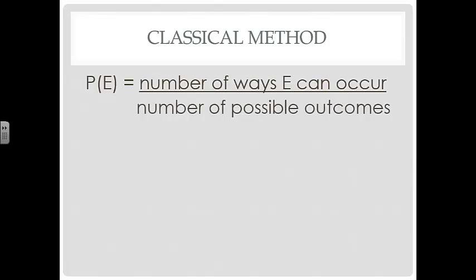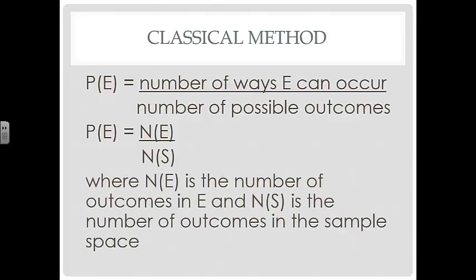All right, so now we're going to take a look at the classical method. And that is basically the relative frequency. So we're looking at the probability of this event, E. And so we're looking at the number of ways that the event can occur over the number of possible outcomes. It can also be written as P of E equals N of E, the number of event, and then number of sample space. So N of E is the number of outcomes in E, and N of S is the number of outcomes in the sample space.